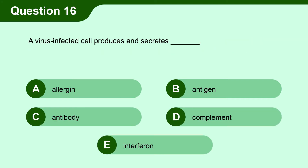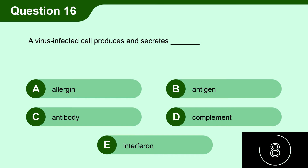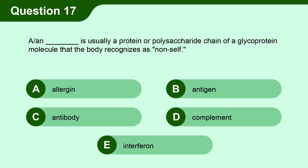Question 16. A virus-infected cell produces and secretes blank. A. Allergen, B. Antigen, C. Antibody, D. Complement, E. Interferon. Question 17. A blank is usually a protein or polysaccharide chain of a glycoprotein molecule that the body recognizes as non-self. A. Allergen, B. Antigen, C. Antibody, D. Complement, E. Interferon.